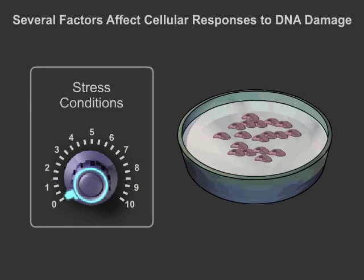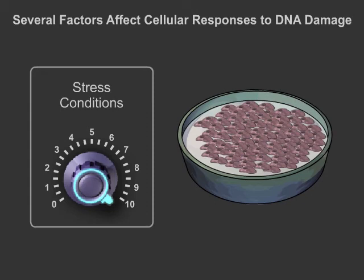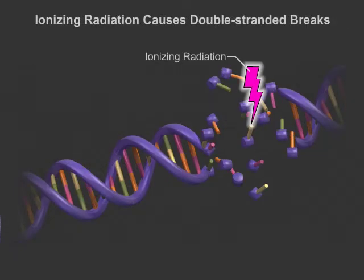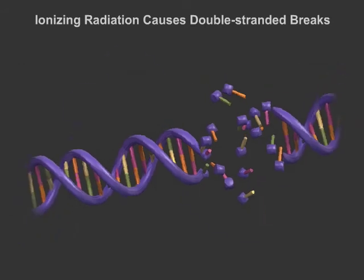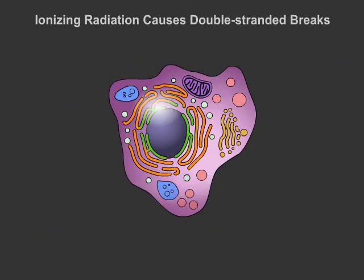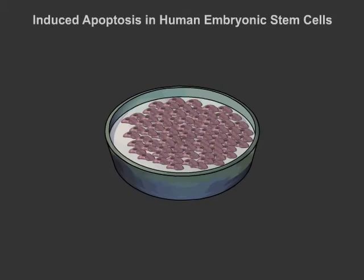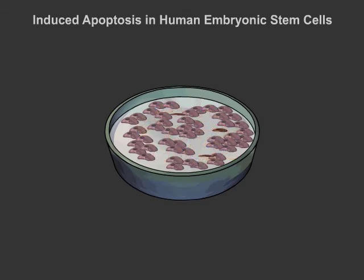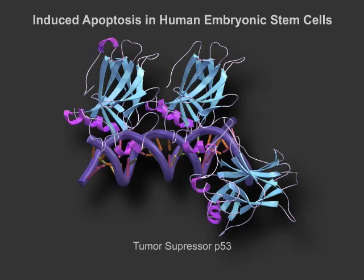Several factors such as the intensity of the stress conditions, cell type, and proliferative potential of the cell affect cellular response to stress. In particular, ionizing radiation causes breaks in the double helix structure of DNA, known as double-stranded breaks. To determine how cells respond to this type of DNA damage, scientists have developed a drug that mimics radiation to induce apoptosis in specific cell types — human embryonic stem cells. This response is unique compared to cancer cells and differentiated cells, and has been connected with a tumor suppressor called p53.